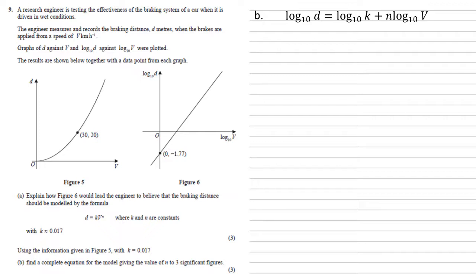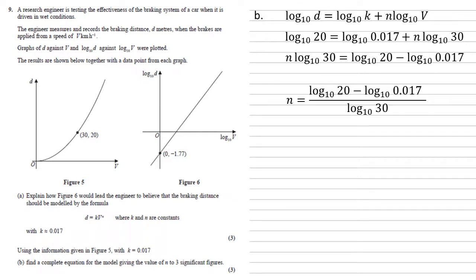We know that log d equals log k plus n log v. We can see in figure 5 that when v is 30, d is 20, and we've been told that k is 0.017. Substituting those in we get log 20 equals log 0.017 plus n log 30. Subtracting log 0.017 from each side gives us n log 30 equals log 20 minus log 0.017.